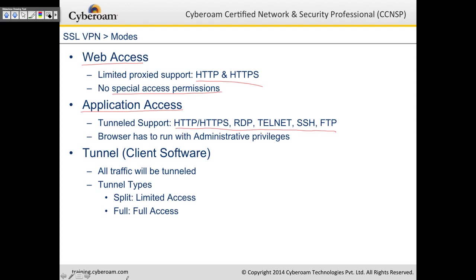In application access mode, for example, you can do an RDP to your RDP server using a browser. The only requirement is that the browser must run with administrative privileges. The third method is tunnel mode, which uses client software downloaded from the CyberROM appliance. All traffic is tunneled via the client software, similar to IPSec. There are two sub-modes: split tunnel, where corporate resources go through the VPN but internet browsing uses the normal connection; and full access, where even the client's internet traffic is routed through the VPN tunnel and monitored centrally.